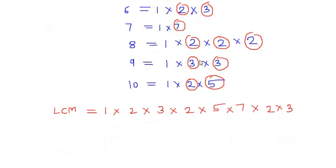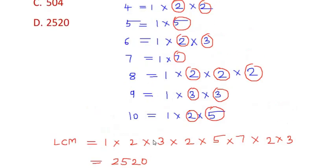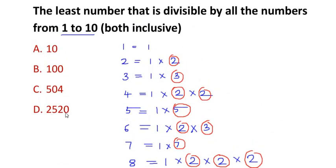So after taking all the common factors, we are going to find out the LCM of this number. So we get it as 2520. After multiplying all these terms, we get 2520. So let us check in the options. We have 2520.